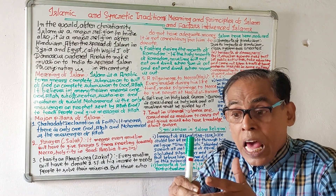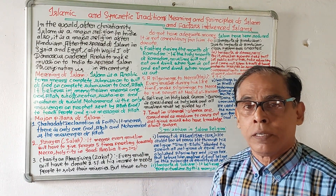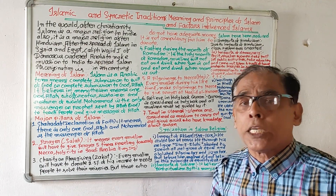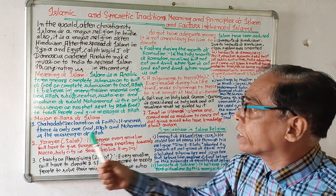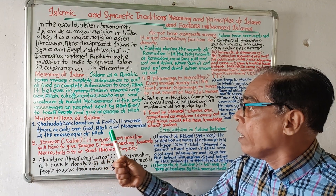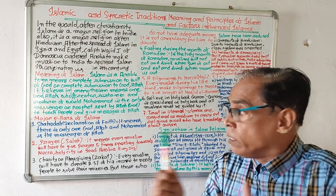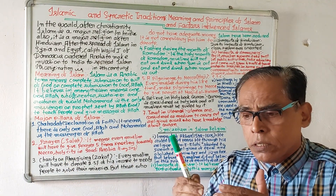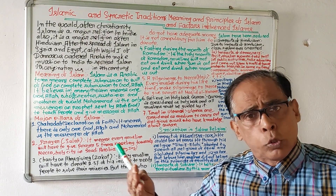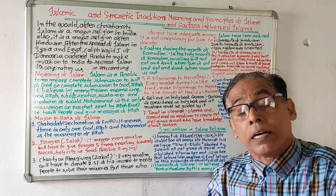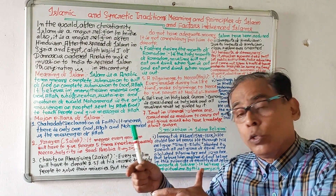Islam has some principles or pillars on which the religion is based. The first major principle of Islam is Shahada — declaration of faith. It means there is only one God, Allah, and Muhammad is the messenger of Allah, sent by Allah to give his message to people.